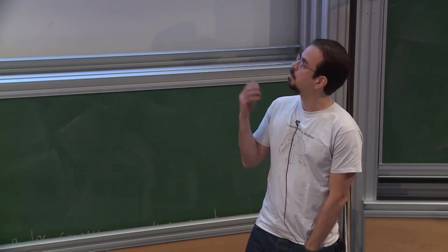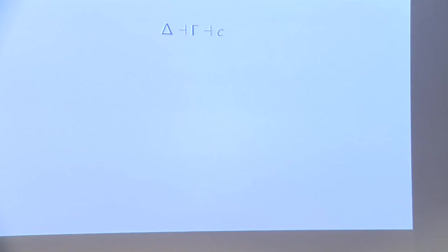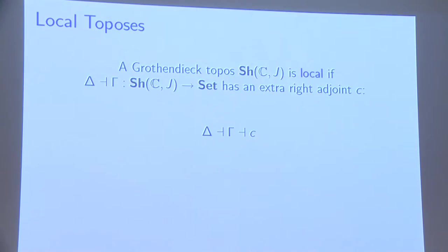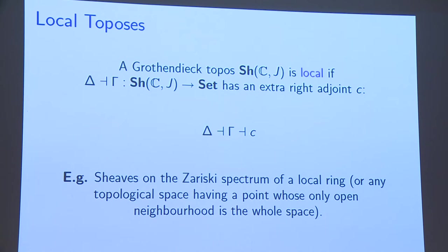I'll start by defining what a local topos is — this is the definition you have in SGA4 by Grothendieck. A Grothendieck topos is local if the unique geometric morphism into Set has an extra right adjoint, which I refer to as C. You then get another geometric morphism going in the other direction. An example of this is sheaves on the Zariski spectrum of a local ring — this is where the name comes from — but you can also generalize this to any topological space having a point whose only neighborhood is the whole space.